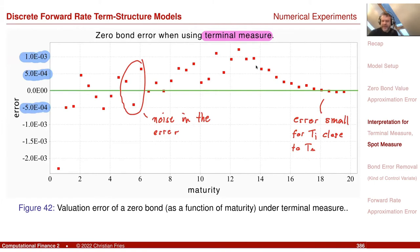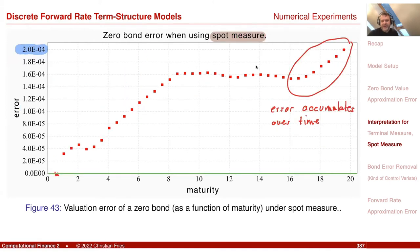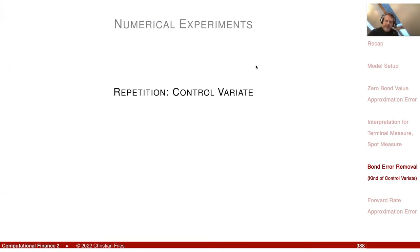There is a big difference in choosing the numeraire and measure with respect to numerical error. Sometimes it may decide which application you have — if you're only interested in what happens at the final time, maybe the terminal measure is best; if you're interested in the whole time horizon, maybe the spot measure is better. Now I would like to show a nice little trick that allows us to actually remove this error completely.